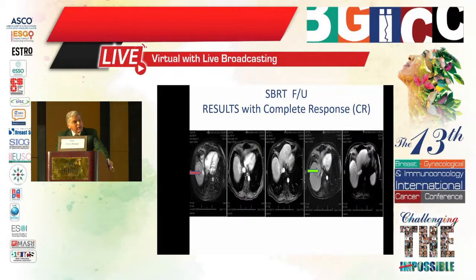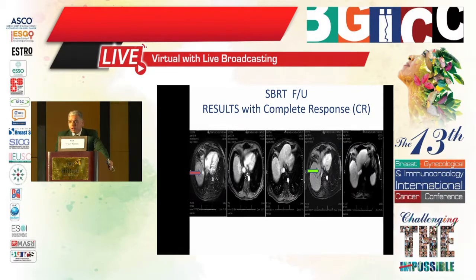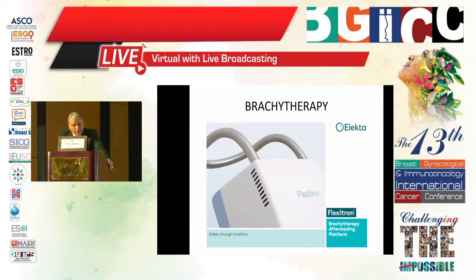Here is one of my favorite patients treated with stereotactic body radiation of the liver — there was complete disappearance of the lesion after radiation within a few months. Now we go to brachytherapy. We bought a new brachytherapy machine, the Flexitron from Elekta, for the Alexandria University Clinical Oncology Department.